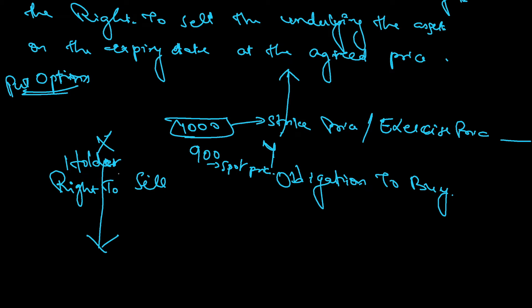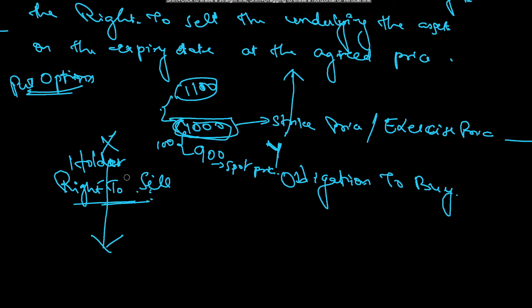The holder believes the price will come down, so if the price comes to 900, that is called the spot price. Mr. X has the right to sell at 1000, so he will make a 100 profit. If the spot price goes to 1100, it is available at 1100 in the market, so he would not execute the contract. All rights are with the holder.